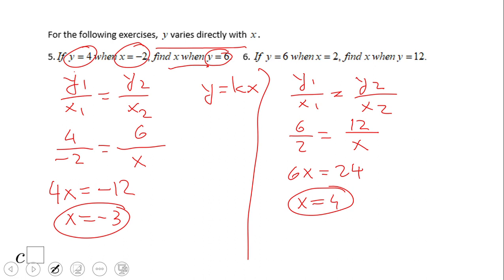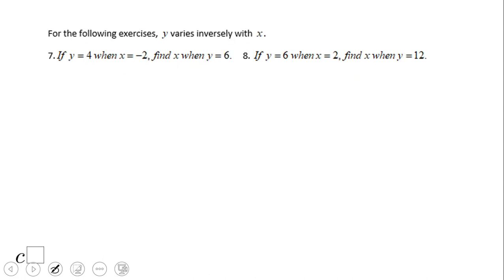Now let's move to these two problems here. We have inverse variation, so we're going to use x1 y1 equals x2 y2 as a way to get this. Of course you can use, if you remember, the other way, y equals k over x, find k and go from there. But let's use this one. So we have here x1, that is negative 2, times y1, that will be 4.